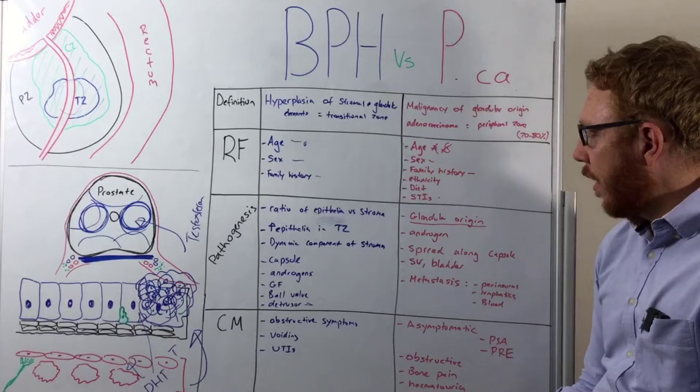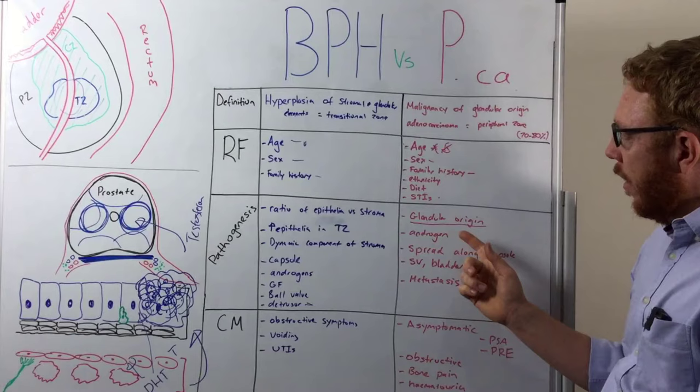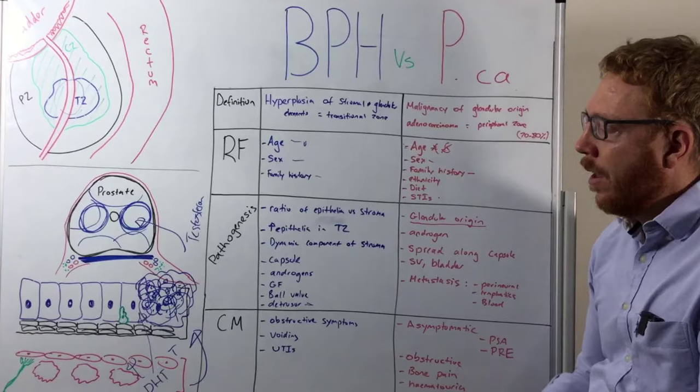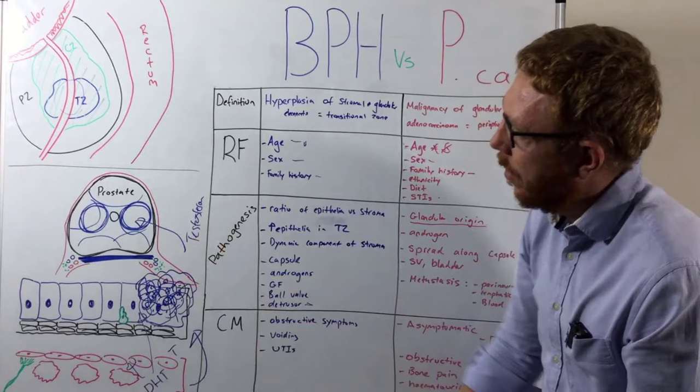Androgens are also very important in prostate cancer. Similarly to BPH, a person who undergoes castration or chemical castration before puberty would not develop prostate cancer. Androgens appear to lay down the platform upon which prostate cancer manifests. Even in treatment, androgen-blocking therapy can reduce the size of the cancer.